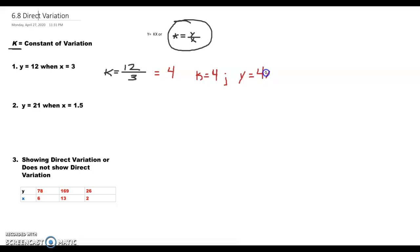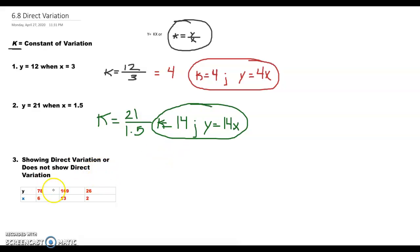Next one: Y equals 21 when X equals 1.5. Let's put it in our equation: K equals 21 over 1.5. Do your math and your answer will come out to 14. Then we put it into the correct equation: Y equals 14X. There is your entire answer.